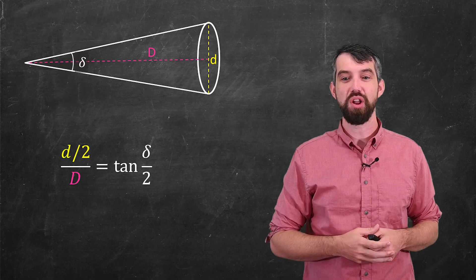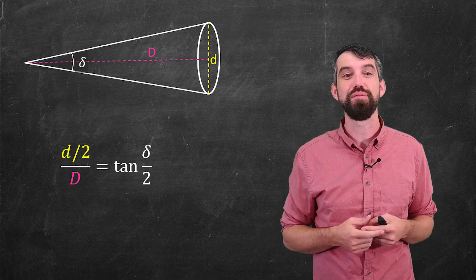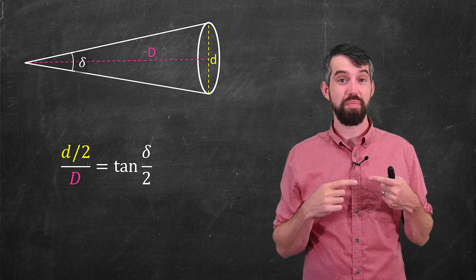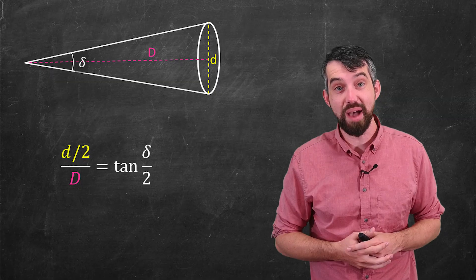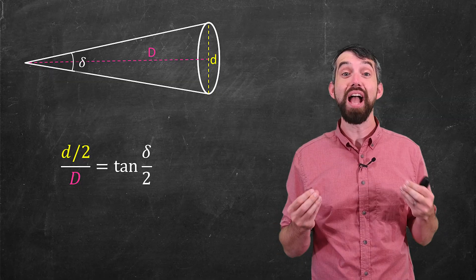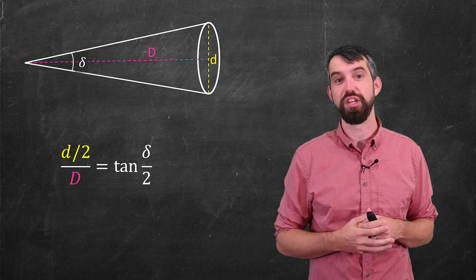So we have the angle delta. Then just by a little bit of trigonometry, if you take the tangent of half of delta, delta divided by two, that's nothing but half the diameter of the supernova divided out by big D. That's just the definition of tangent.